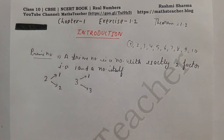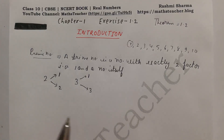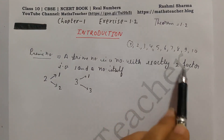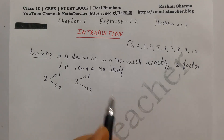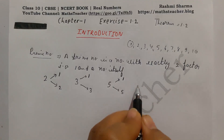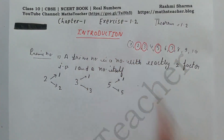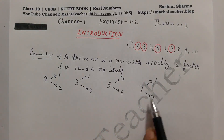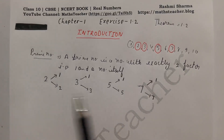3 also comes from the 1-table and 3-table, so it is also a prime number. Next, 4: it comes from the 2-table and the 1-table, so 4 is divisible by 1, 2, and 4 — more than 2 factors — so it is not a prime number; it is a composite number. 5 and 7 each have only 2 factors (1 and themselves), so they are prime numbers. The smallest prime number is 2.